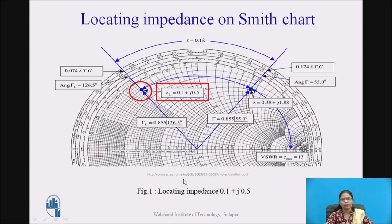Here you can see Rn equal to 0.1 and Xn equal to 0.5. The coinciding point is the impedance point ZL which is 0.1 plus J0.5.